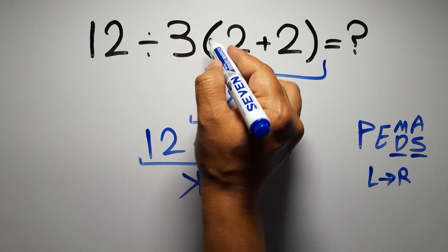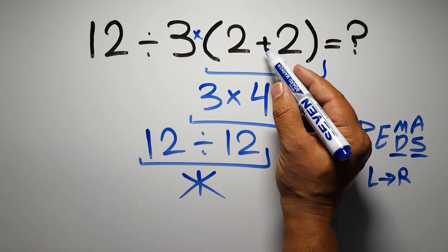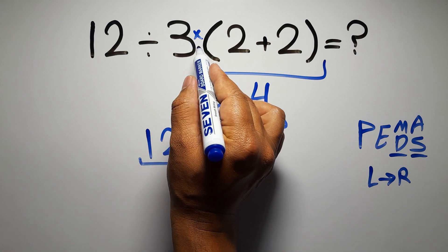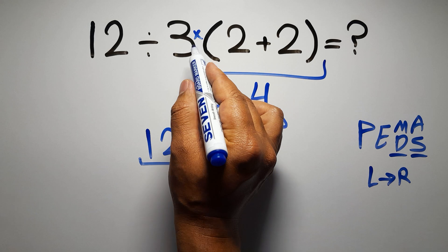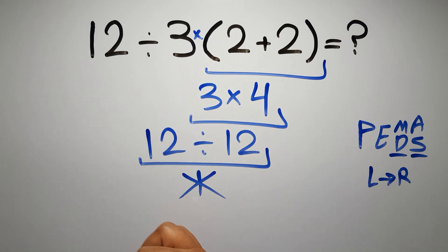In this expression, we have one division, one multiplication, and one parentheses. Inside these parentheses, we have one addition. Here we have a multiplication, because in mathematics, when a number is placed next to parentheses, it means multiplication. We usually don't write the multiplication sign for brevity.